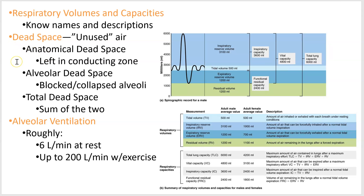Dead space: you won't use all the space in your lungs for gas exchange. The entire conducting zone is dead space — there's air in your trachea even at the deepest breath that never reaches the respiratory zone. That's called anatomical dead space. If you've got blocked alveoli from mucus or collapse, that creates alveolar dead space. Together they give you total dead space. At rest, you breathe in about 6 liters per minute; during vigorous exercise, that can go up to about 200 liters per minute.